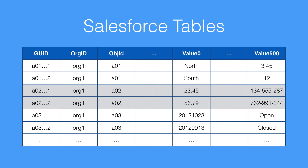Salesforce has a slightly different method because its tables are set up to have flex columns. On a custom object, you can have up to 500 fields that store data, and they're all stored in one big table in the background as text. At runtime, Salesforce retrieves the value from the correct cell in the correct column and converts it into the correct data format. The table structure includes a global unique identifier (GUID), the org ID, an ID for the object, and then 500 flex columns. Any sort of data can be stored there, and for each object the data type will be the same, but the column itself has no fixed strict data type — just strings.